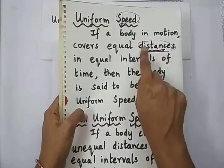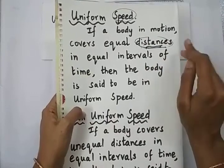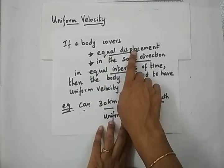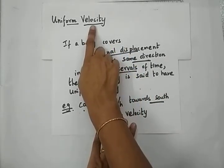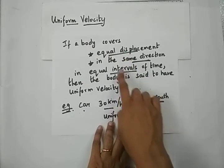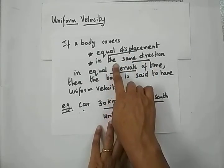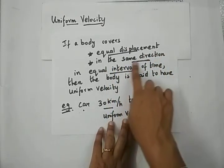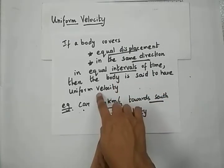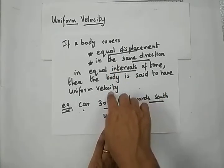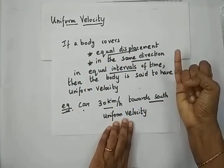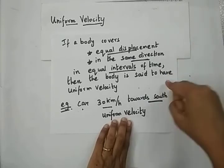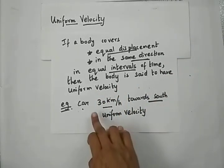Just replace the word distance with displacement and add direction specified. So how will you define uniform velocity? If a body covers equal displacement in equal intervals of time and maintains the same direction, then the body is said to have uniform velocity. To recall the definition: if a body covers equal displacement in the same direction in equal intervals of time, the body is said to have uniform velocity.